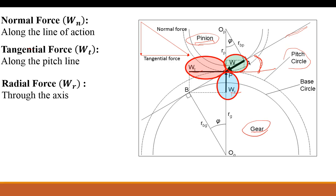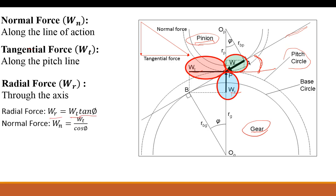The way these forces are calculated: the radial force is simply the tangential force times the tangent of the pressure angle. The normal force can be calculated as the tangential force divided by the cosine of the pressure angle. The tangential force itself is calculated as the torque being put into the system divided by the radius of the gear. Think of it as calculating a moment — the radius and the force being applied gives you a torque, so inversely, torque divided by radius gives you the tangential force.